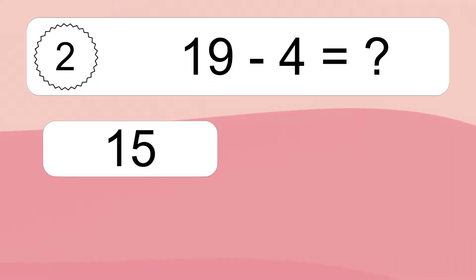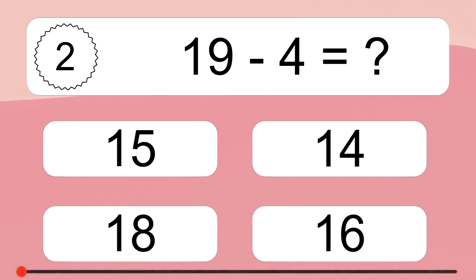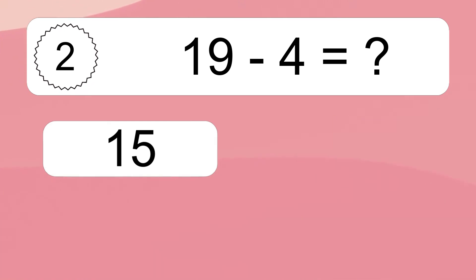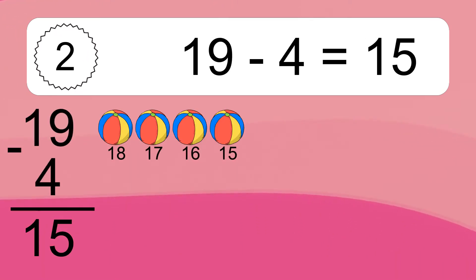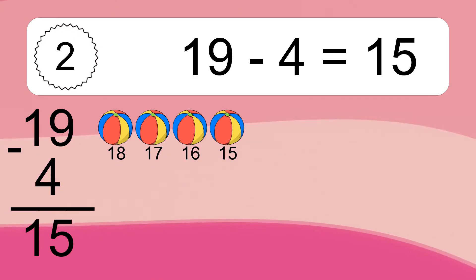19 minus 4 equals what? 19 minus 4 equals 15. Let's count it: 18, 17, 16, 15.